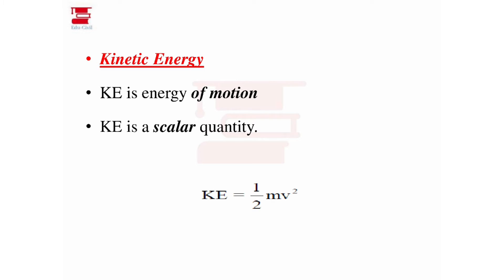Momentum is mv. The momentum will change, and if there is such a change over time, the kinetic energy will change. The mass mv gives velocity of kinetic energy. The kinetic energy is one-half mv squared — that is the equation.